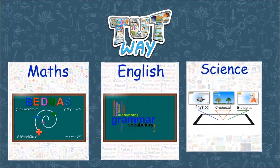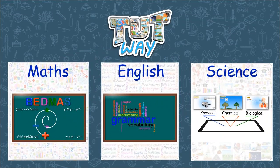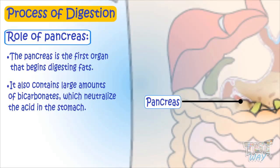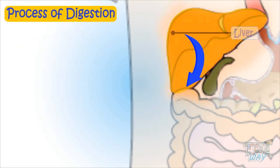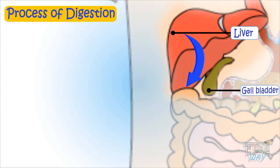The liver produces a digestive juice called bile, which is stored in the gallbladder.